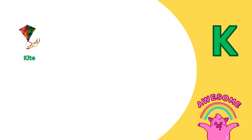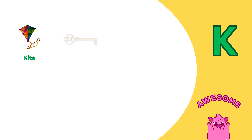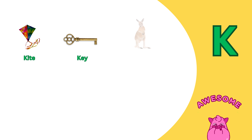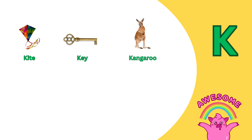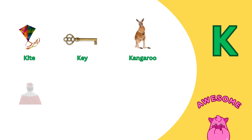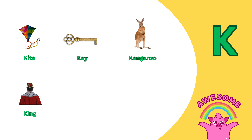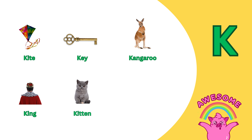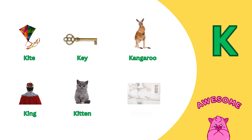K is for kite. K is for key. K is for kangaroo. K is for king. K is for kitten. K is for kitchen.